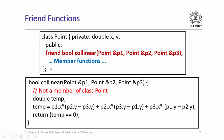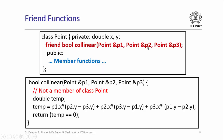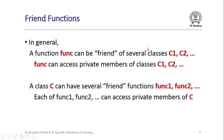Here is where the friend declaration comes in useful. I can declare inside the class Point definition that the function collinear — which returns a boolean and takes three references to objects of class Point — is a friend, by prepending its declaration with the keyword friend. This grants the function access to the class's private data members. The friend declaration can be placed in either the public or private section of the class; it does not matter. In general, a function can be a friend of several classes, having access to the private members of all of them, and a class can have several friend functions.